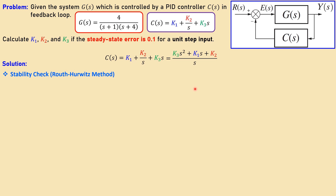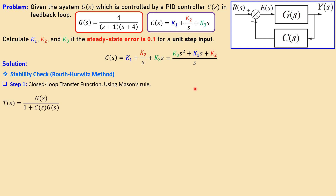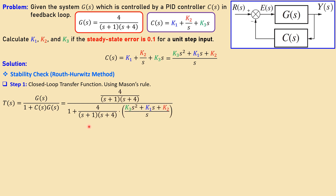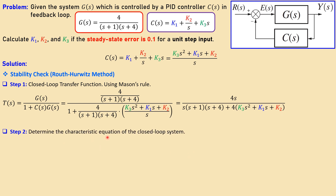Next we always check stability. In this case I will use the Routh-Hurwitz criterion for the stability analysis. I start with the closed-loop transfer function using Mason's gain rule: the forward path divided by one plus the loop gain. Substituting the PID expression we get G(s) over one plus G(s) times the controller. Rewriting this gives a simplified form with 4s in the numerator over a third-order expression in the denominator.